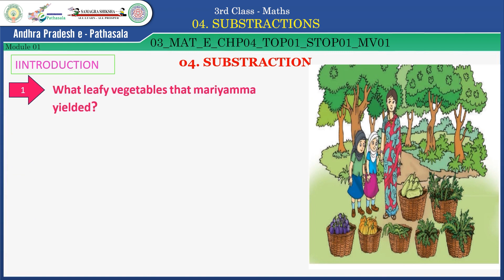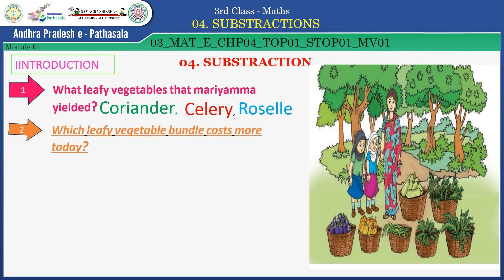What leafy vegetables did Mariamma yield? Yes — coriander, celery, rosalie. Very good, children. Next question: which leafy vegetable bunch costs more today? Yes — coriander. Next question.